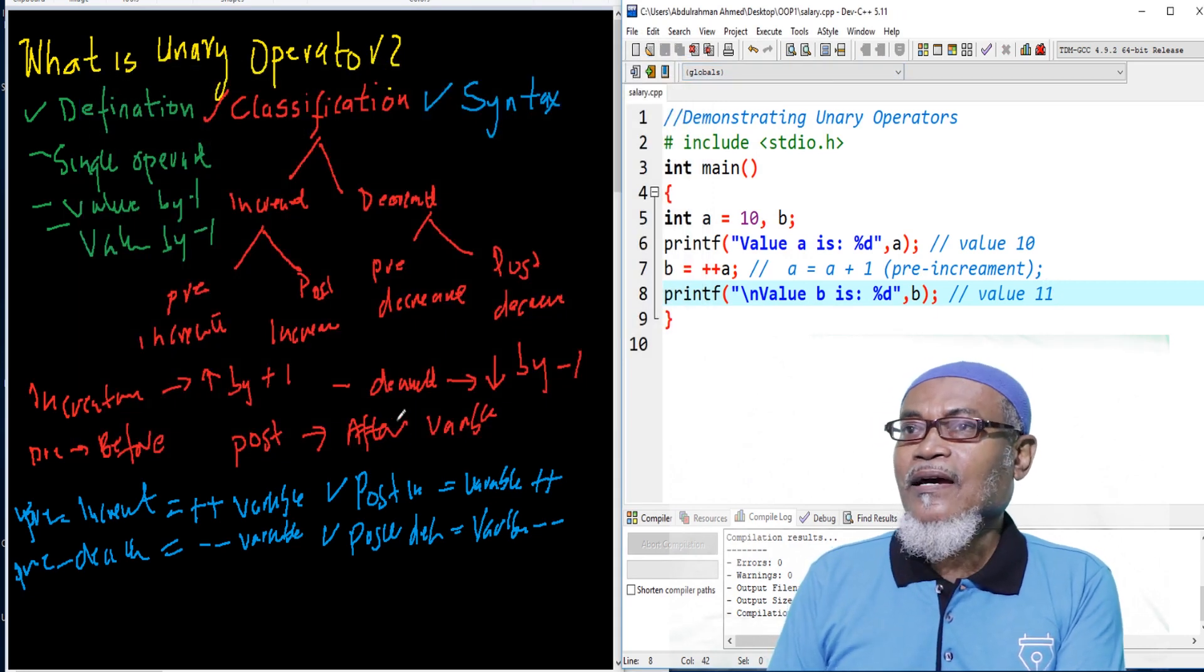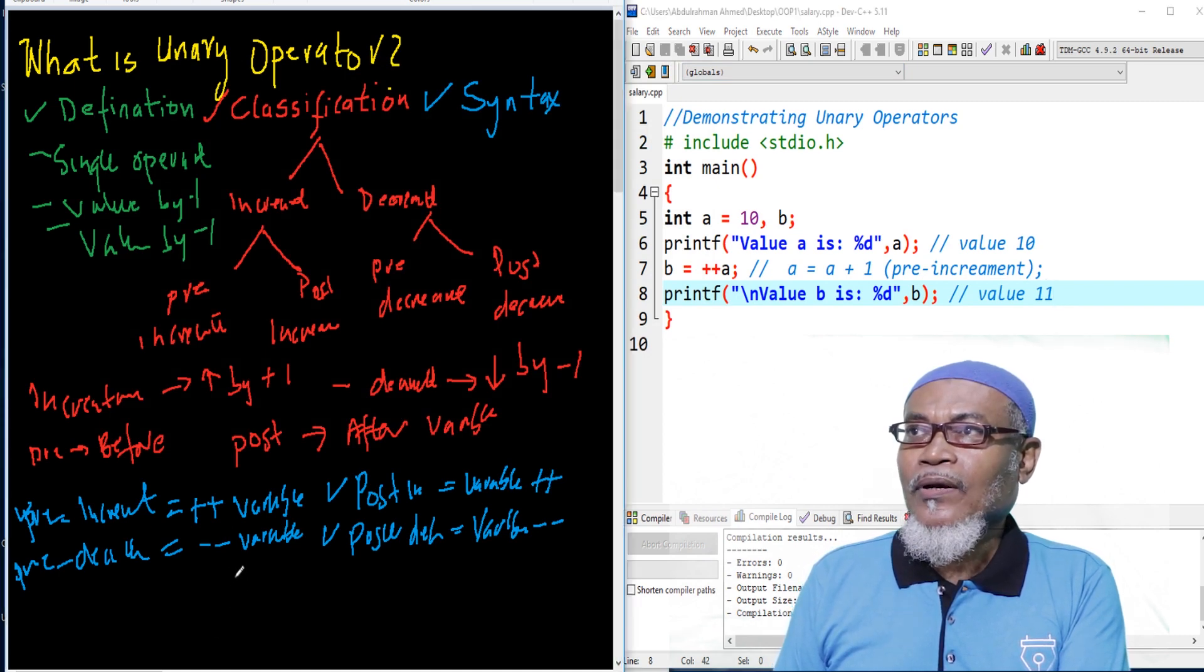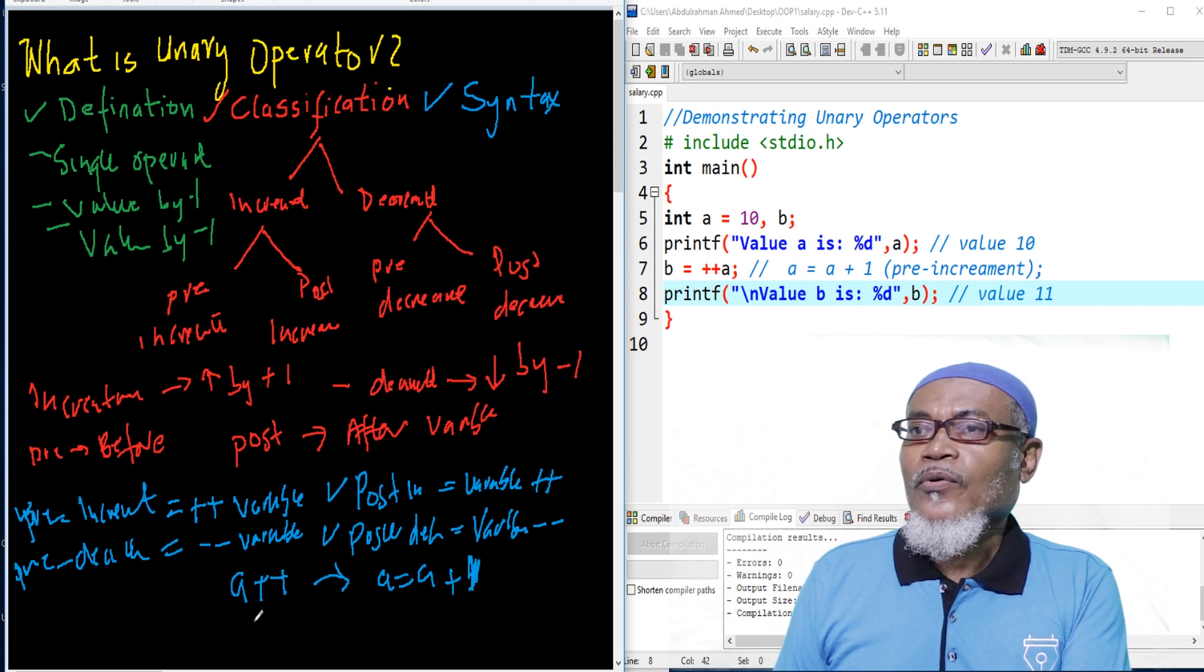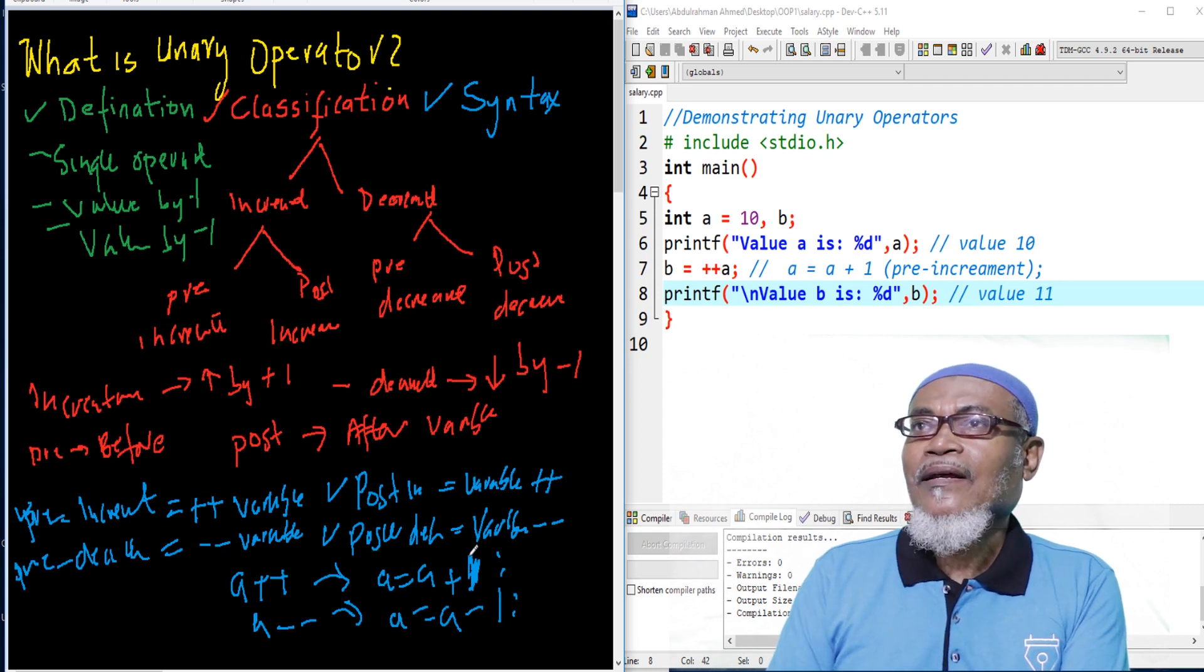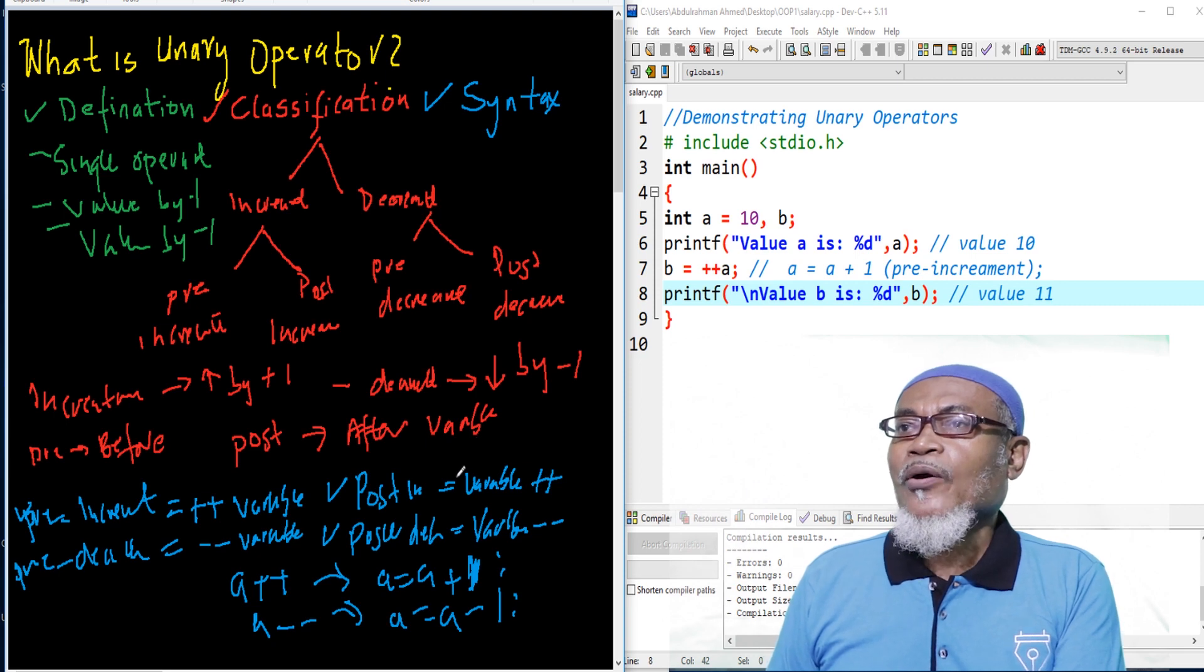So, in summary, we should understand that when we are saying, for example, A plus plus, it actually means A is equal to A plus 1. And when we are saying A minus minus, it means A is equal to A minus 1. So, basically, that is it about increment and decrement. We have the pre and the post. So, we are going to continue with the operators in our next lesson.